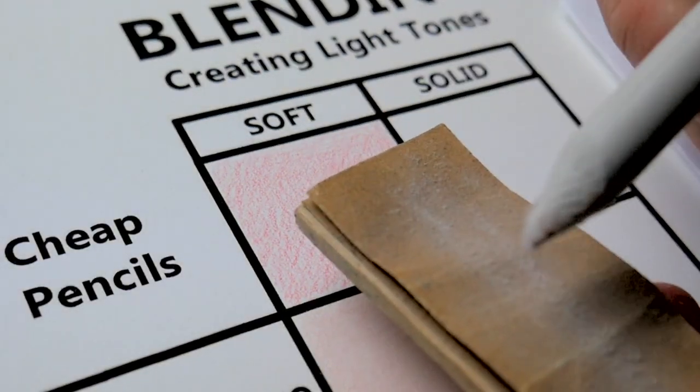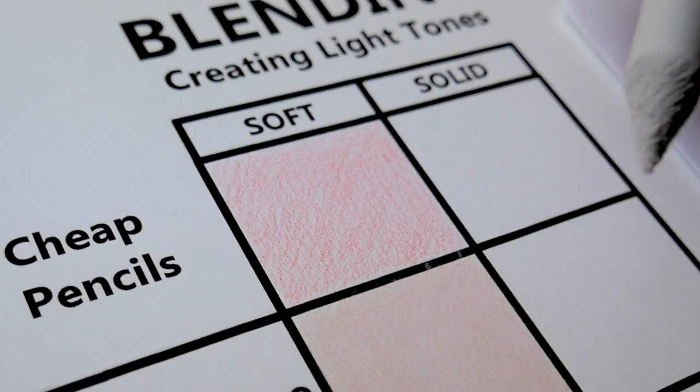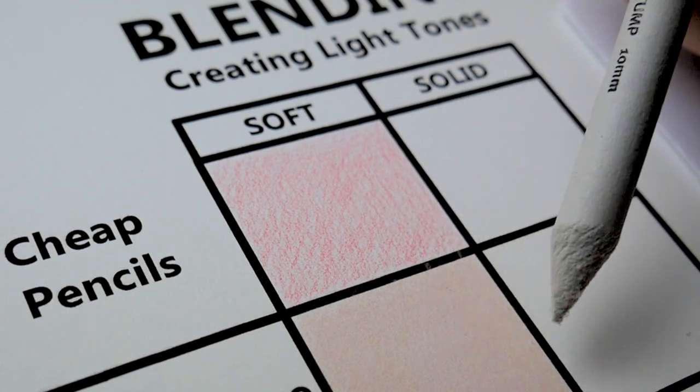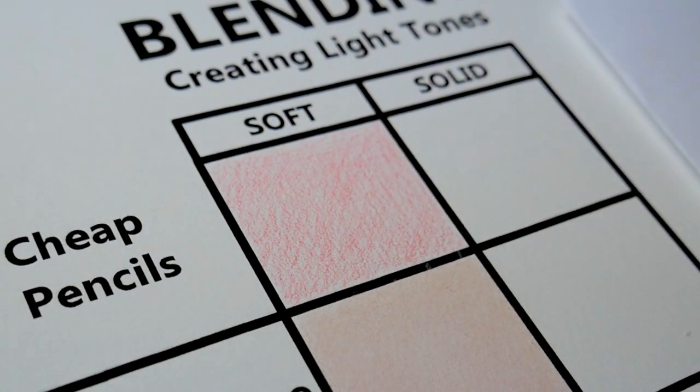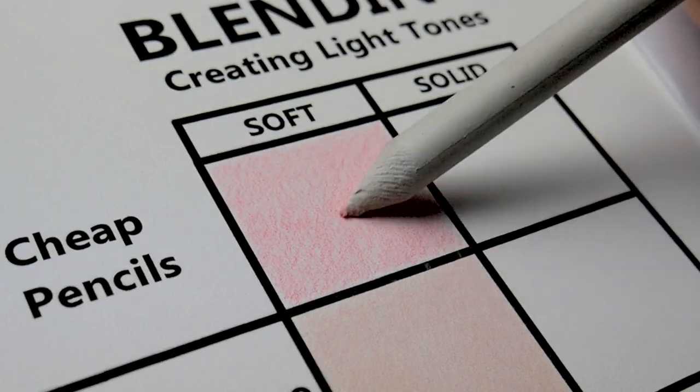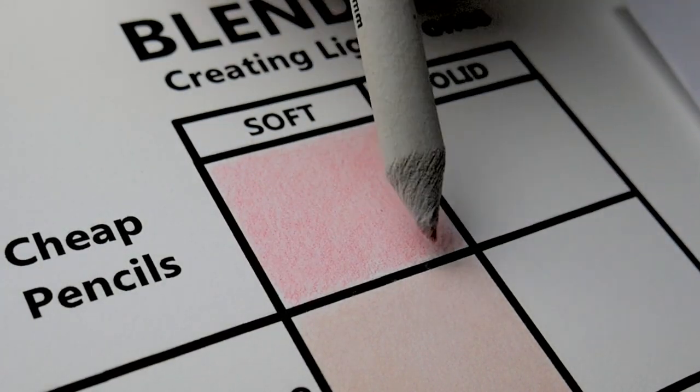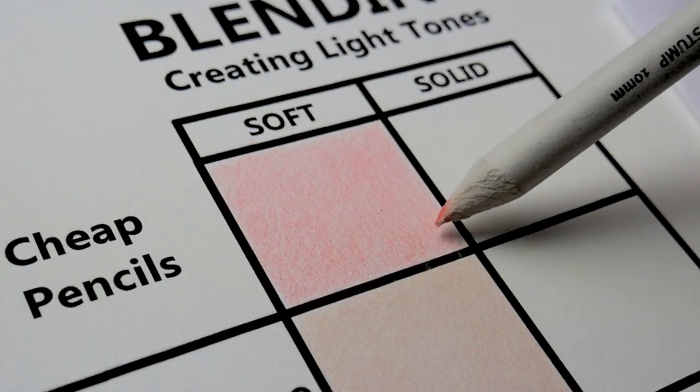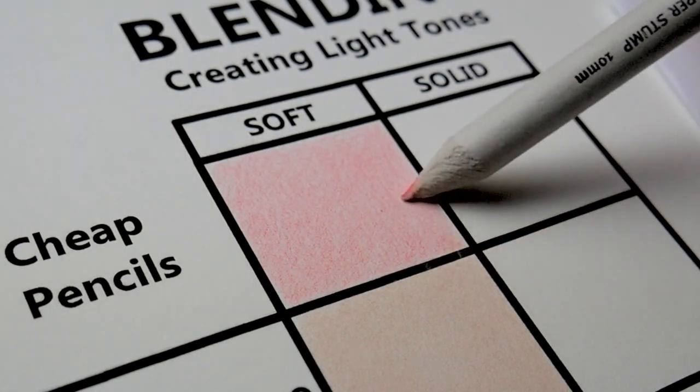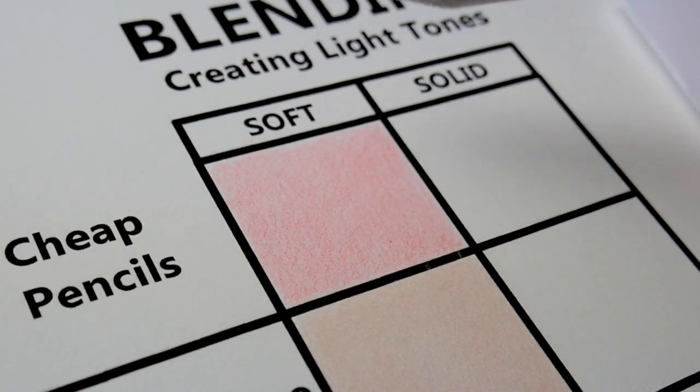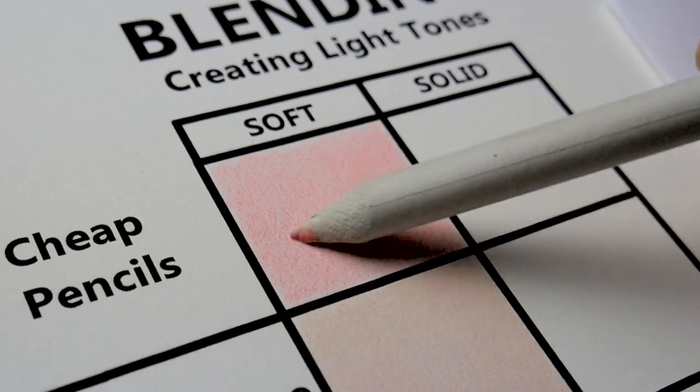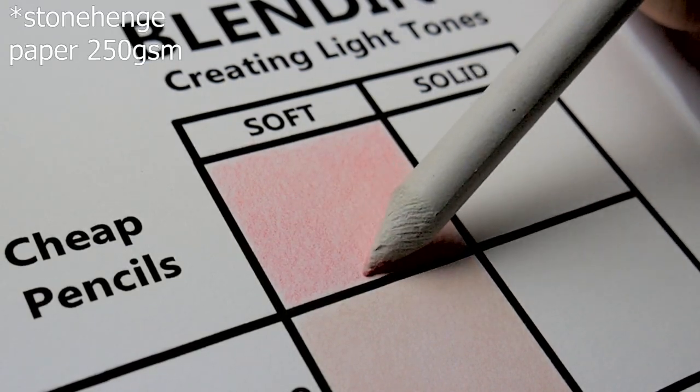What I'm doing is I'm using sandpaper to remove the color that I got on the tortillion when I was blending this area out. If you're wondering what I'm thinking, I'm a little bit surprised how good that is. Wow, that wasn't bad. But then again I am using quite expensive paper.